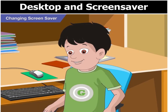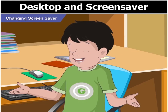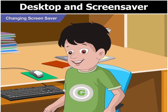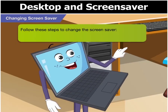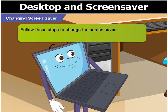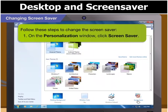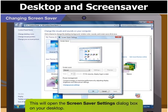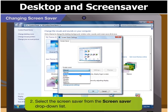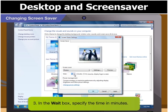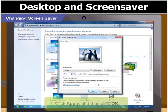Yes, yes! This was the window I used in class today to change the screen saver. Ok, so let's first see how to change the screen saver. On the Personalization window, click Screen Saver. This will open the Screen Saver Settings dialog box on your desktop. Select the screen saver that you want to apply from the Screen Saver drop-down list. In the Wait box, specify the time in minutes. Click Apply and then click OK.